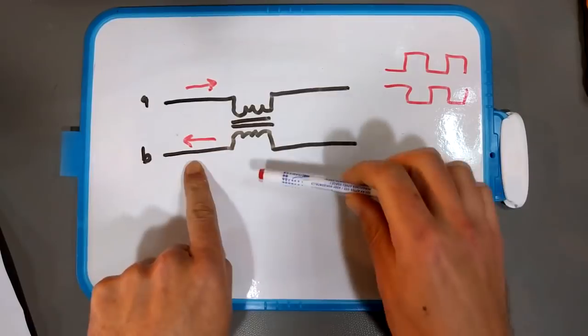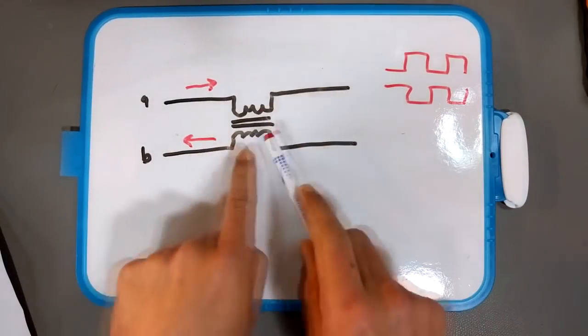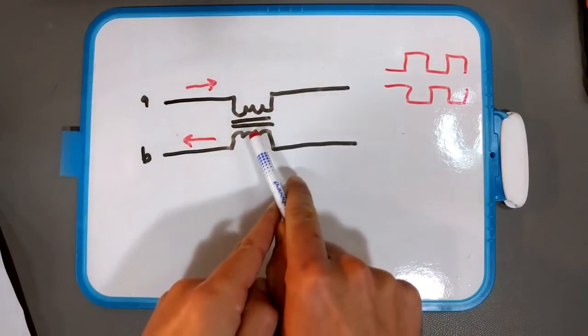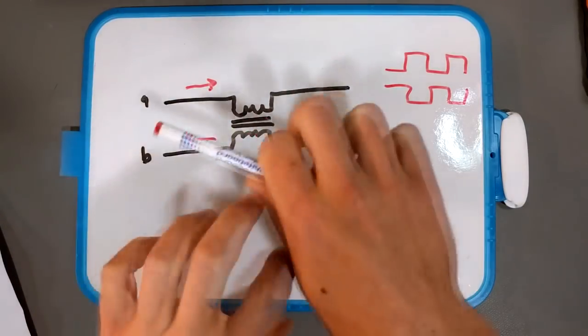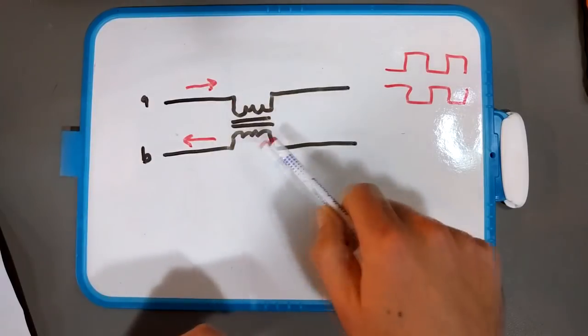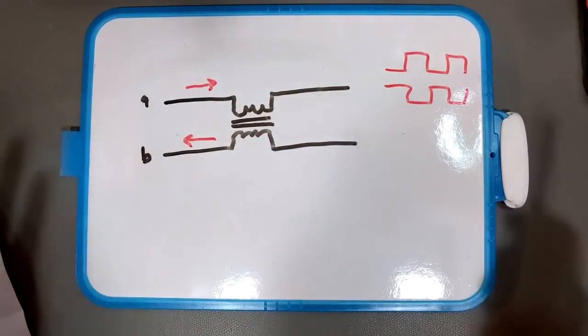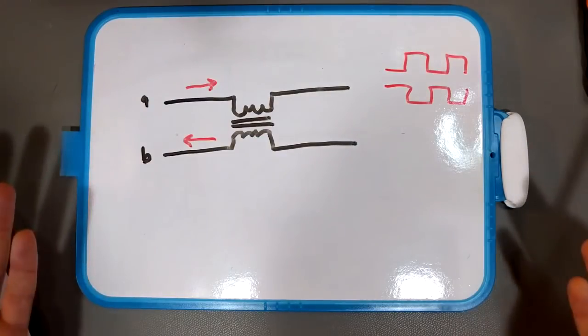But if in wire B the current is flowing in the opposite direction you get also a magnetic field induced in the ferrite core but it's an opposite magnetic field so both magnetic fields cancel and your data signal actually passes right through and you're fine.